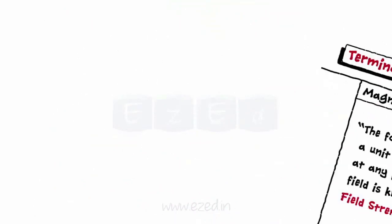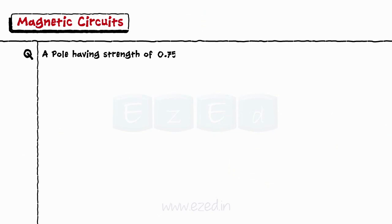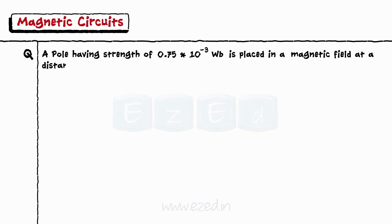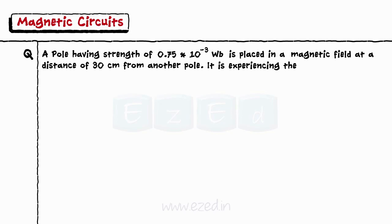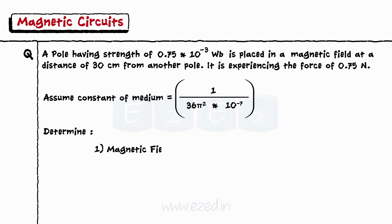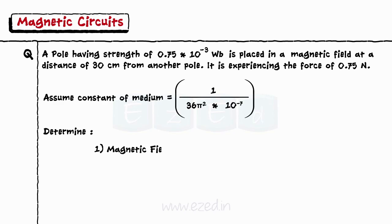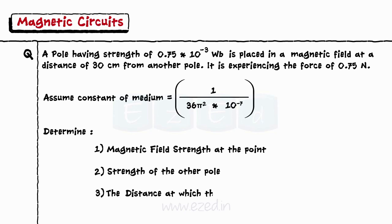Let's take an example. A pole having strength of 0.75 × 10⁻³ Weber is placed in a magnetic field at a distance of 30 centimeters from another pole. It is experiencing a force of 0.75 Newton. Assume the constant of the medium equals 1/(36π² × 10⁻⁷). Determine: magnetic field strength at the point, strength of the other pole, and the distance at which the force experienced will be doubled.